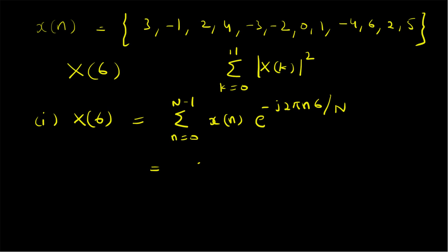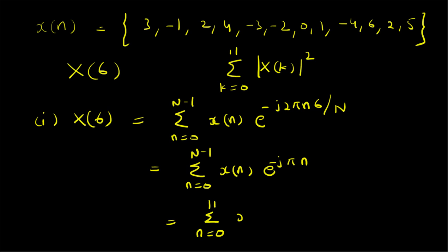The summation becomes the sum from n=0 to 11 of x[n] · e^(-jπn). Since e^(-jπ) equals -1, and n are all integers, this simplifies to the summation from n=0 to 11 of x[n] · (-1)^n. So X[6] is basically this weighted sum.